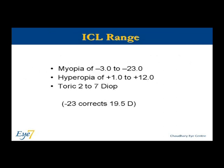ICLs are available in the range of minus 3 to minus 23 diopters and from plus 1 to plus 12 diopters. Toric ICLs are available from 2 to 7 diopters, with minus 23 diopters correcting up to minus 19.5 diopters of myopia.